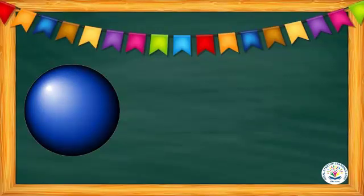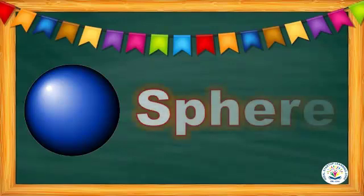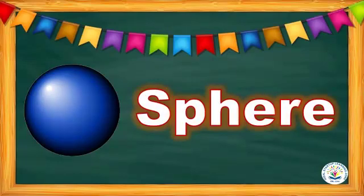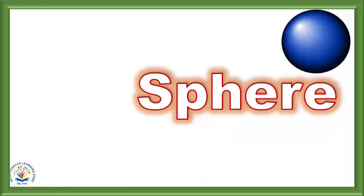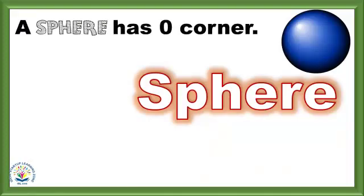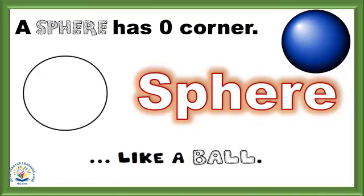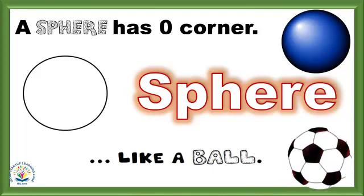What shape is this? Yes, it is a sphere! S-P-H-E-R-E. Sphere. Say with me: sphere! A sphere has zero corners, and it looks like a ball.